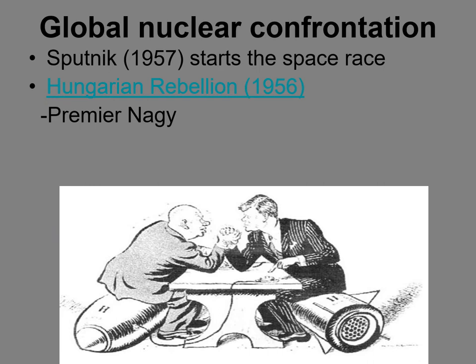In 1956, some of what Kennan predicted seemed like it might be coming true in Hungary. When thousands of protesters took to the streets in popular demonstrations, the leader of Hungary instituted a series of reforms. He ended the one-party system and dropped Hungary's membership in the Warsaw Pact — the system was imploding from within, just like Kennan said it would. However, Khrushchev tried to get Nagy to undo the reforms. When Nagy didn't comply, the Soviets invaded Hungary and suppressed the movement. 25,000 Hungarians and Nagy died as a result.